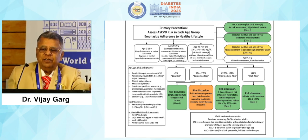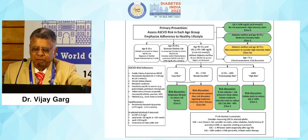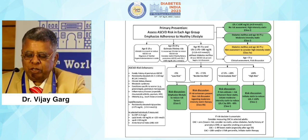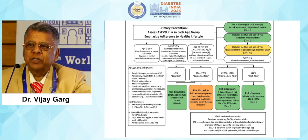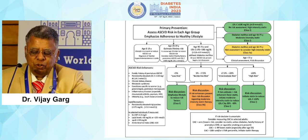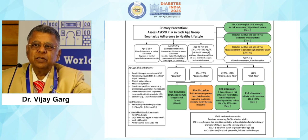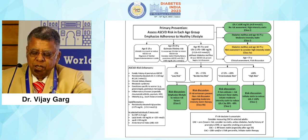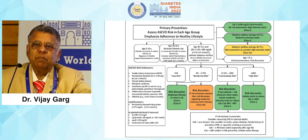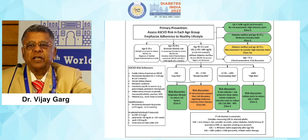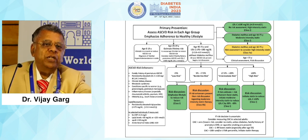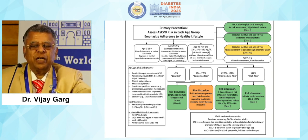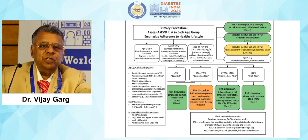This important slide shows that all diabetic patients between 40 to 75 years of age should receive moderate-dose statins. All patients with LDL more than 180 should receive statins. We also need to calculate the risk score — if it is more than 7.5 to 20 percent, statins should be given. Additionally, if the coronary calcium score on CT angiography is more than 100, they should also receive moderate-dose statins.